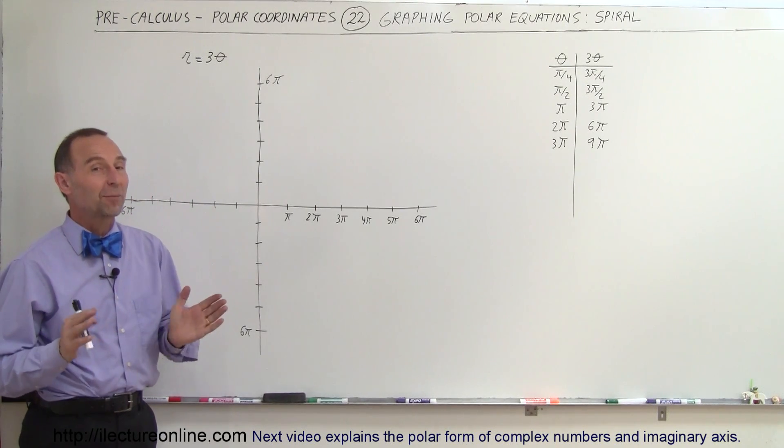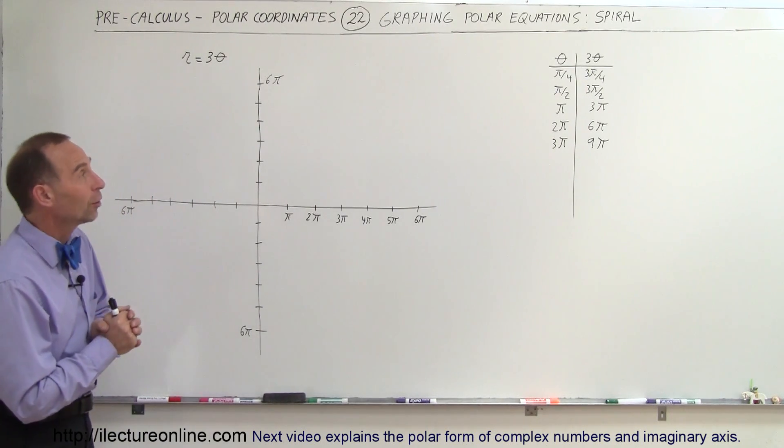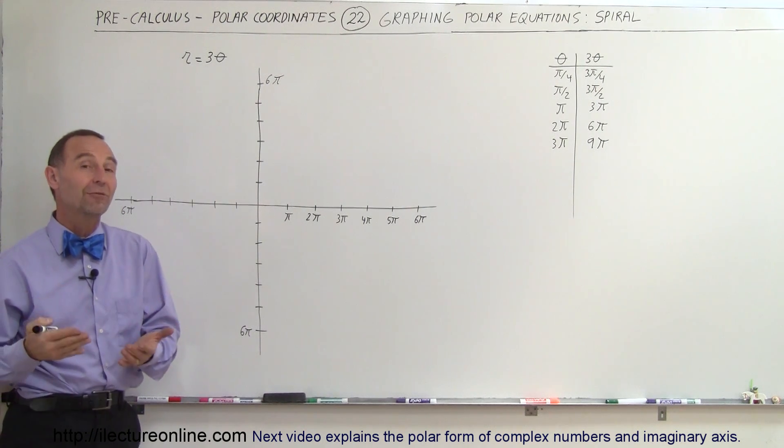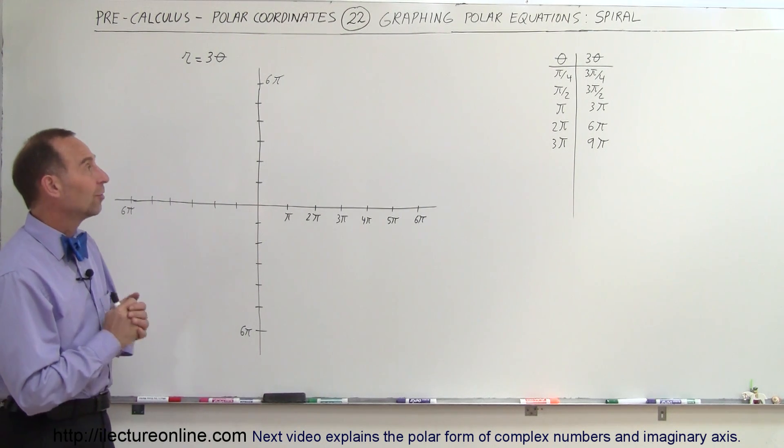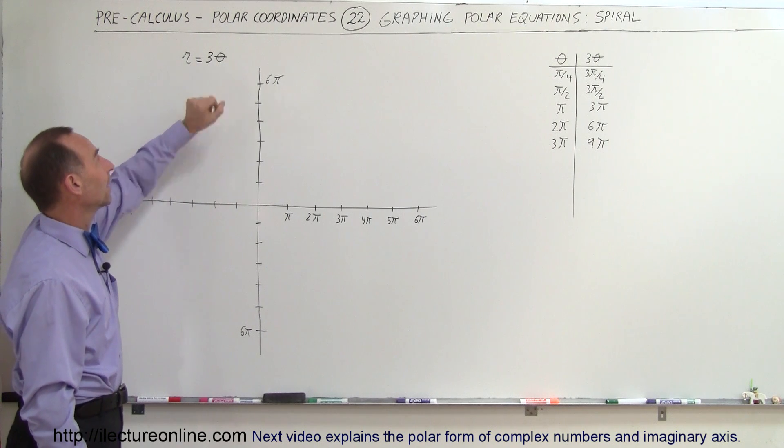Welcome to Electron Line and the one graph that we haven't touched upon yet is what we call the spiral. It's a very unique graph for polar coordinates, and here we have the equation where r equals 3 theta.